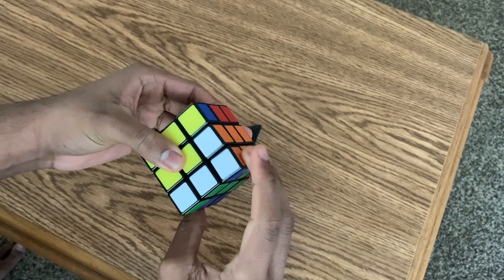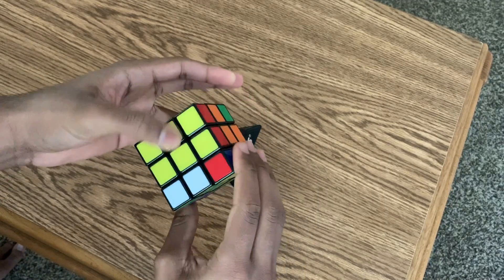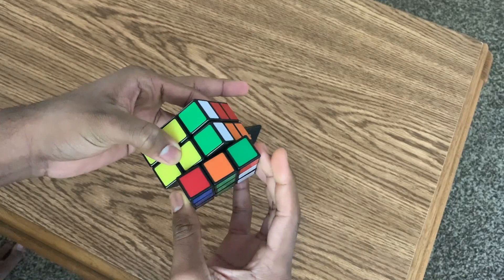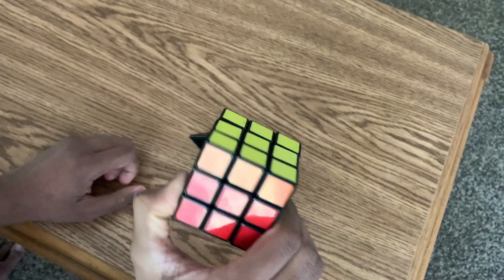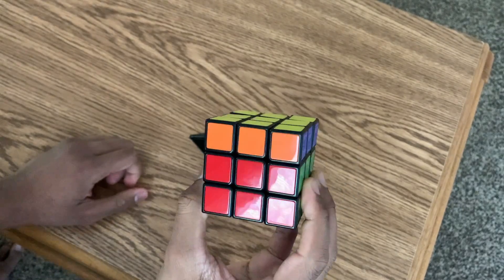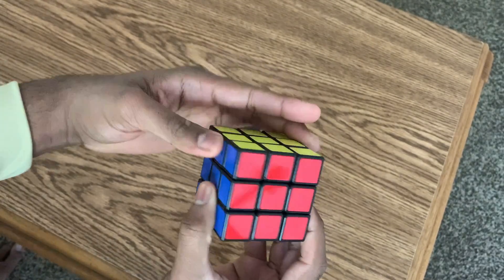U, R reverse, U reverse, R. U, R reverse, U reverse, R. And there's literally one step that you can find out right now. Just spin it, and the cube is solved. Okay, do not move on.